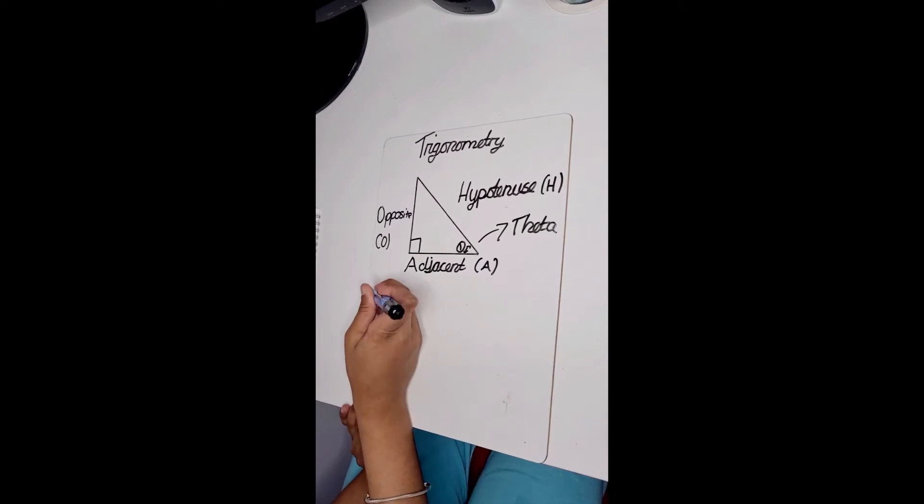So, sine theta equals opposite over hypotenuse.